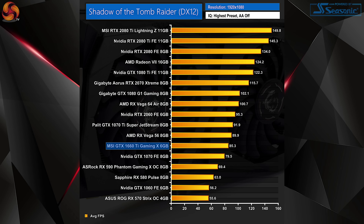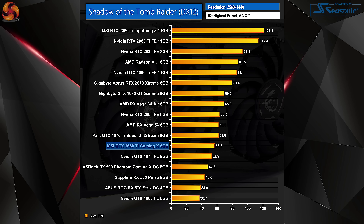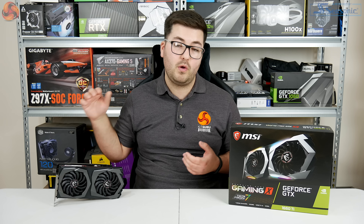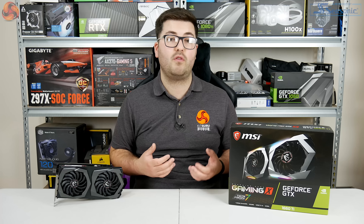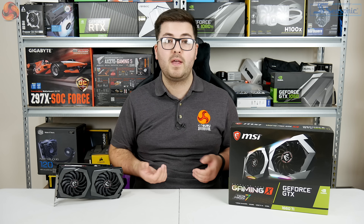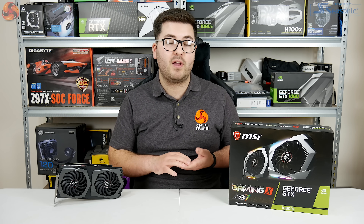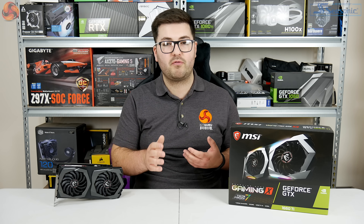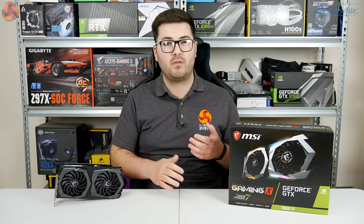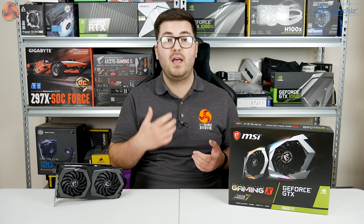Especially at 1080p, we saw frame rates almost always over 60fps. In Far Cry 5, average frame rates hit 100fps, so with a 1660 Ti you'd be well suited for a high-refresh-rate monitor. If you're a 1440p gamer, the 1660 Ti will handle that fine, though you might see minimum frame rates drop into the 40fps zone depending on the title.